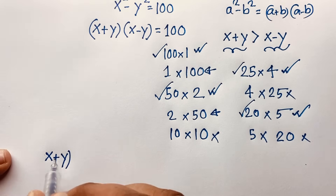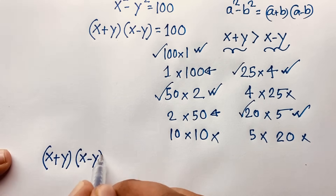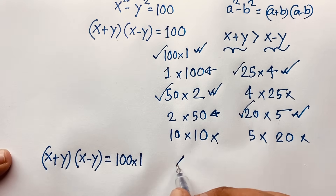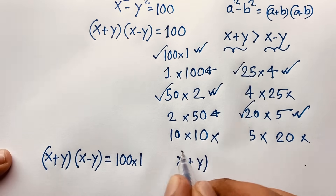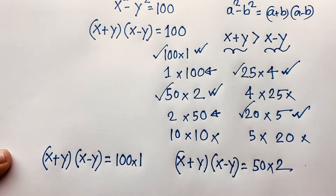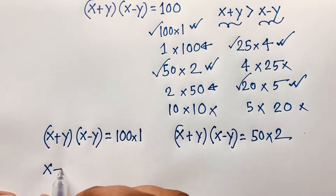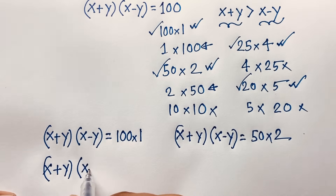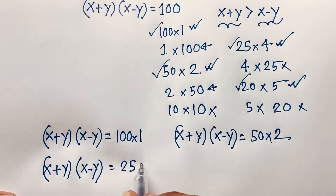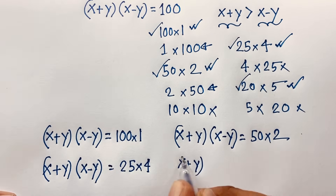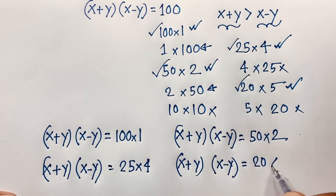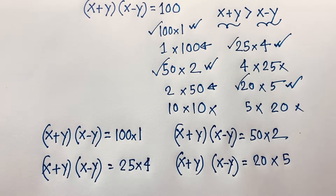The four cases are: Case 1 — (x plus y)(x minus y) = 100 times 1; Case 2 — (x plus y)(x minus y) = 50 times 2; Case 3 — (x plus y)(x minus y) = 25 times 4; and Case 4 — (x plus y)(x minus y) = 20 times 5.